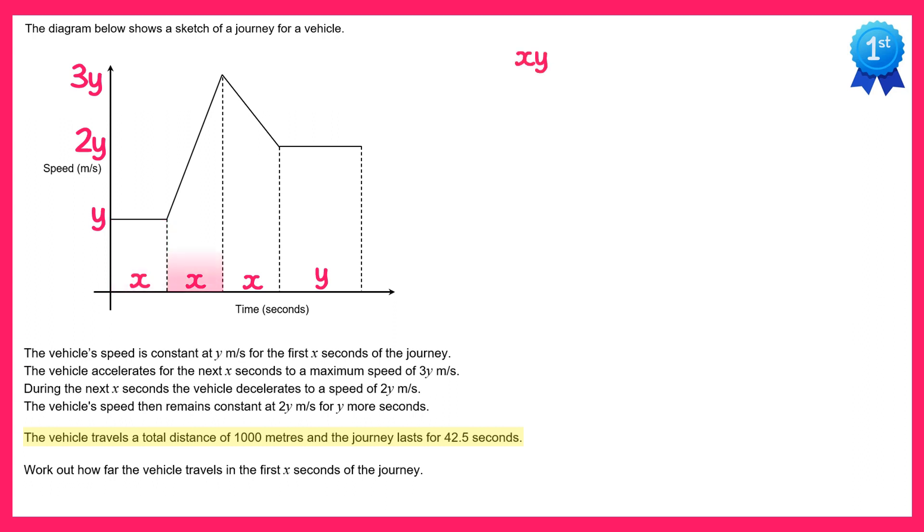Then we'll look at this section here. Now this is a trapezium, it's turned on its side from your normal view of a trapezium but we can still work out its area. It's one half times the sum of the parallel sides, now the parallel sides will be y and 3y, multiplied by the height which in this case will be x. y plus 3y is 4y and half of 4y is 2y, so it's 2y times x which is 2xy.